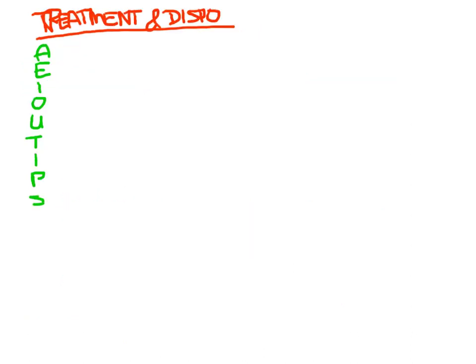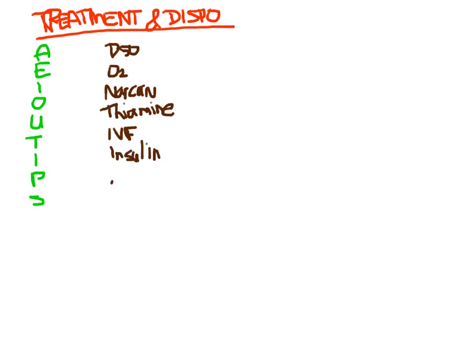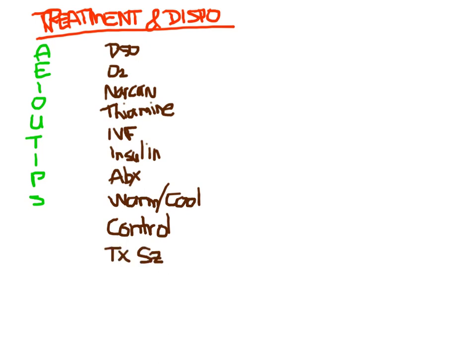For treatment, a lot of these things will happen concurrently with evaluation. We'll be giving the coma cocktail — dextrose, oxygen, Narcan, and thiamine — along with IV fluids, insulin for hyperglycemia, and empiric broad-spectrum antibiotics for any potential infectious sources. If they're hot, cool them; if they're cool, warm them. Control their blood pressure — if it's too low, bring it up; if it's too high, bring it down. Treat any seizures with benzos, treat electrolyte abnormalities like hyponatremia with saline, and obviously treat whatever cause you found: MI, thyroid storm, uremia requiring dialysis.